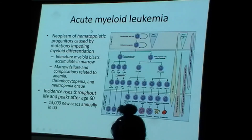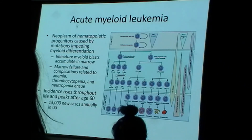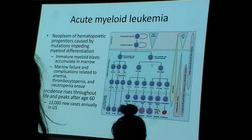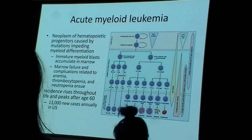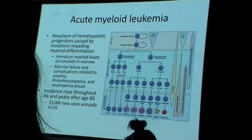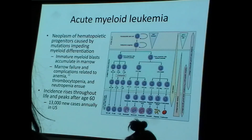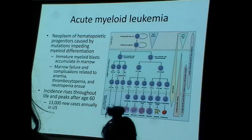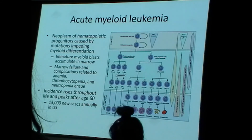AML, or acute myeloid leukemia, is a somewhat common leukemia with an increasing incidence throughout life — it peaks around age 60. AML is characterized by cancer of hematopoietic progenitors. The cancerous progenitor cell impedes myeloid differentiation. Immature myeloid blasts accumulate in the marrow, and as a result marrow failure occurs, with symptoms related to tri-lineage cytopenias: anemia, thrombocytopenia, and neutropenia.